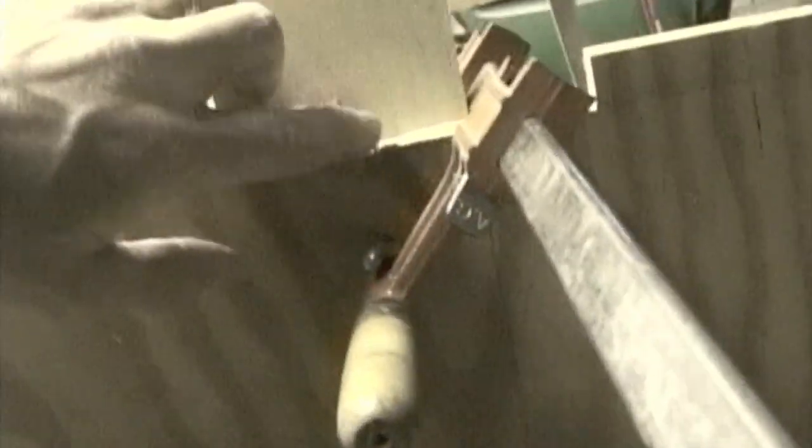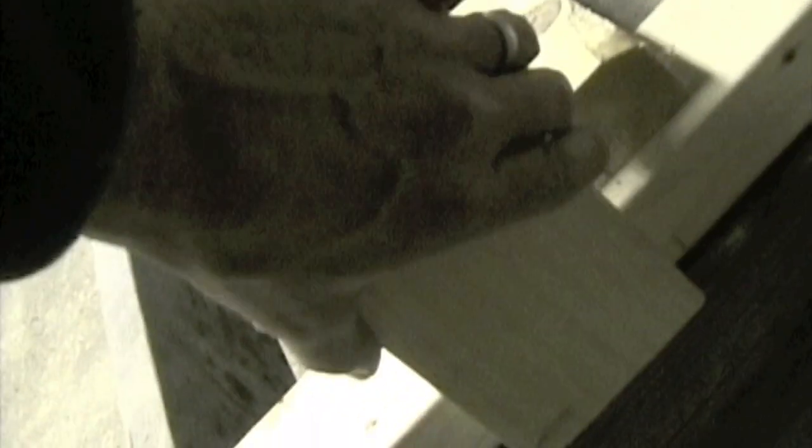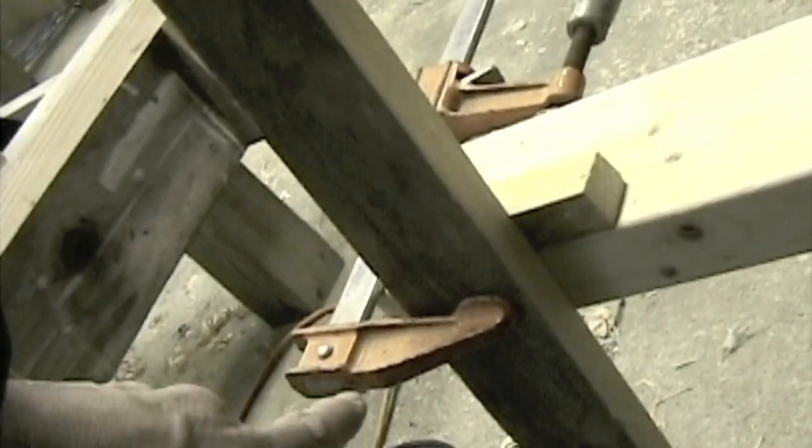We previously marked the center line of the transom right through here, so I've attached a board that follows the center line then extended it down to where the center of the strong back would be. So I just have to move these over just a little bit and line up the center of the transom, and then I can attach the legs right to the strong back with deck screws.